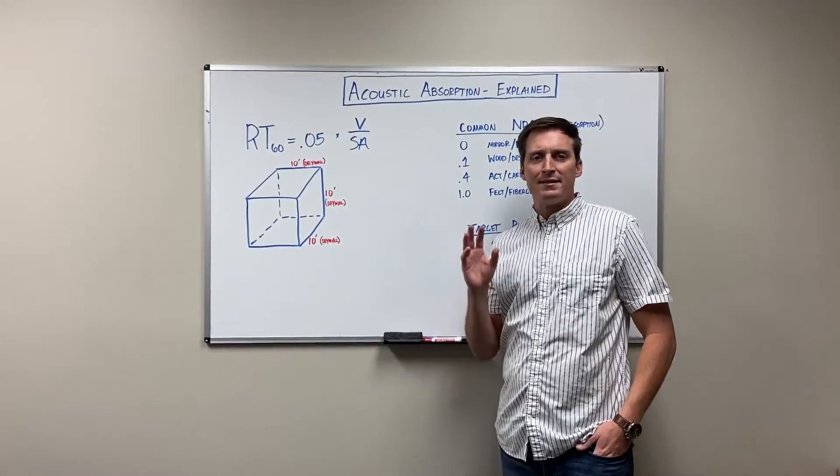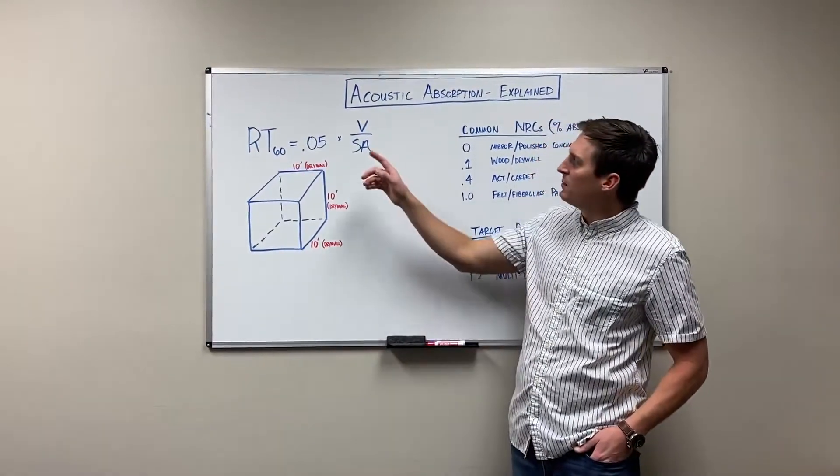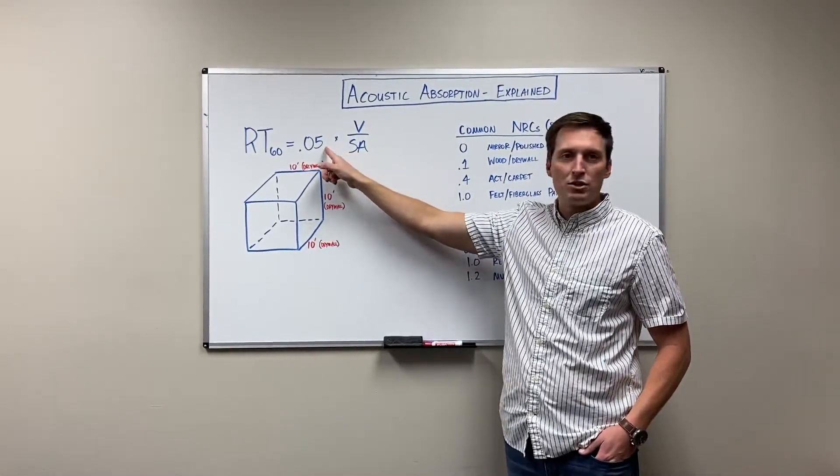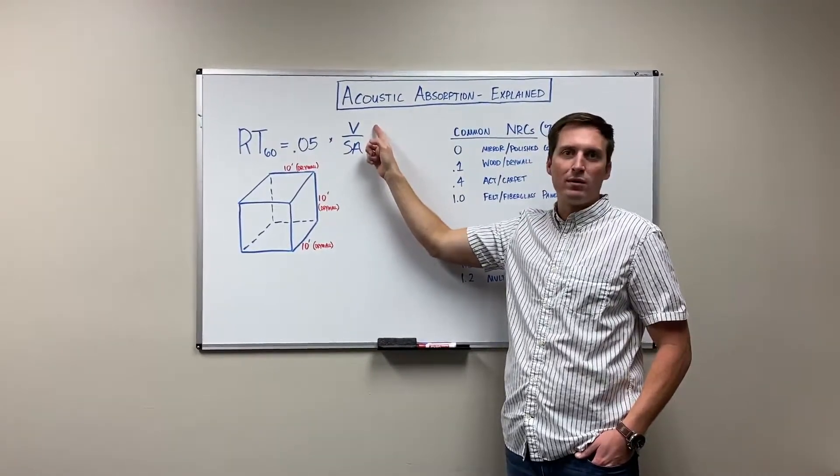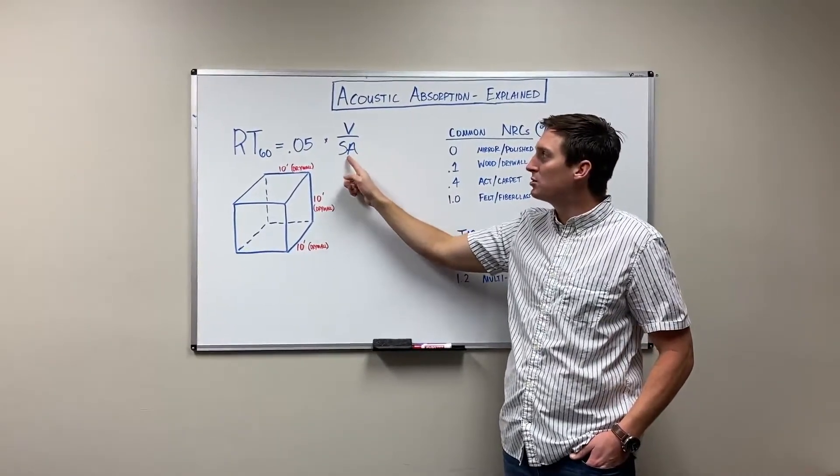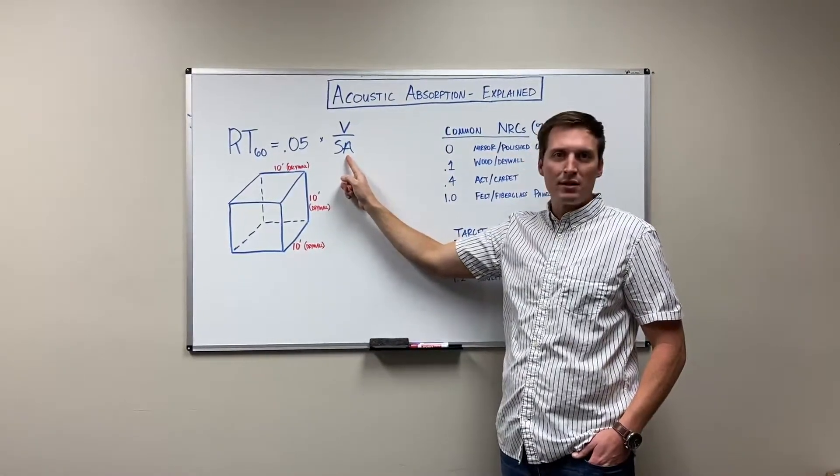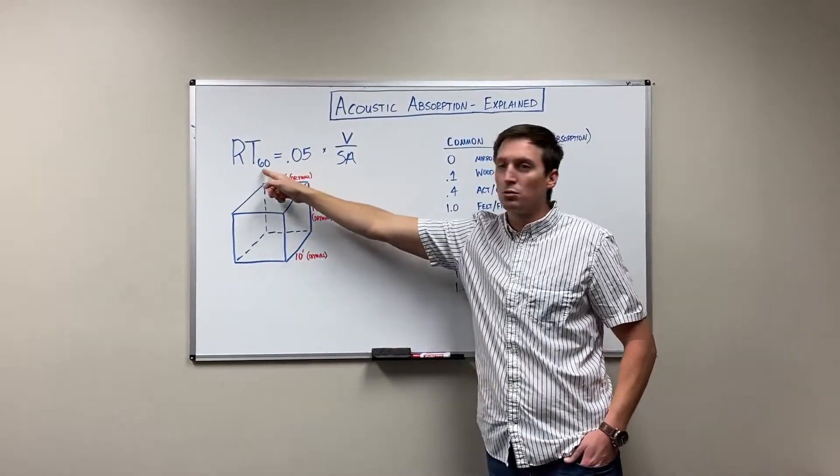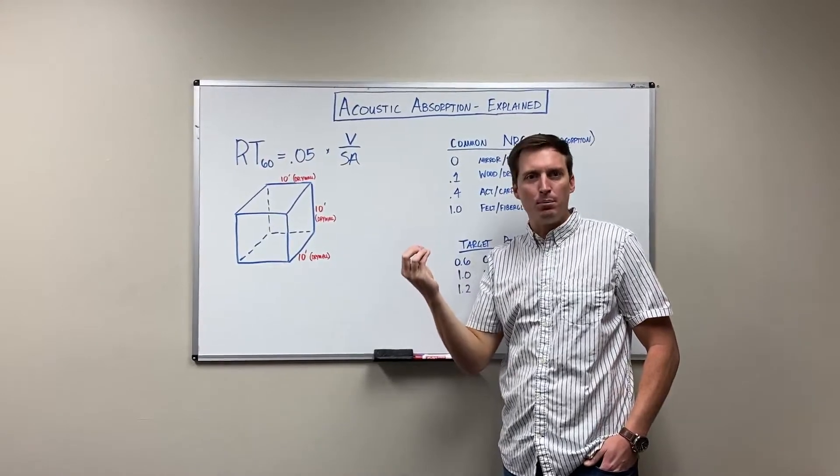So the first thing we're gonna look at is how much acoustic absorption you need in your space. This is calculated with something called the Sabins formula. And what you have here is a coefficient 0.05 times the volume of the space, length times width times height, divided by the surface absorptive space. So you're looking at a few different variables there and all of this gives you your reverb time, your RT60 value.